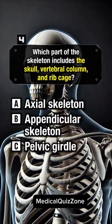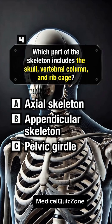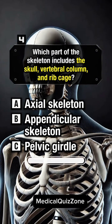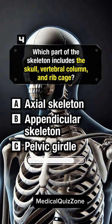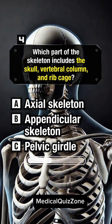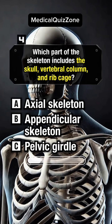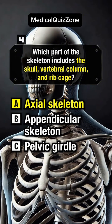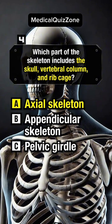Which part of the skeleton includes the skull, vertebral column, and ribcage? Answer A: Axial skeleton.